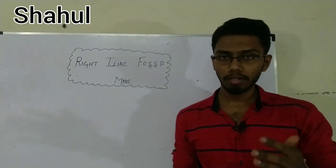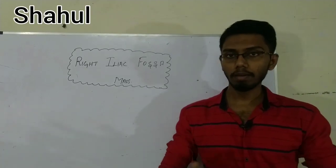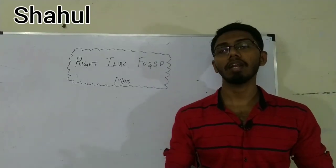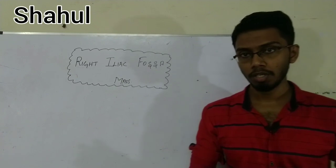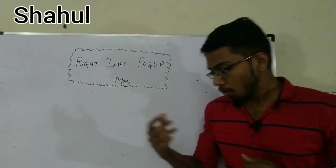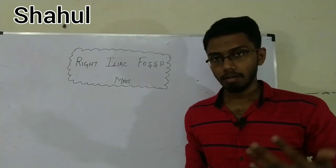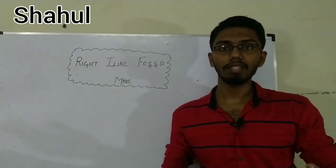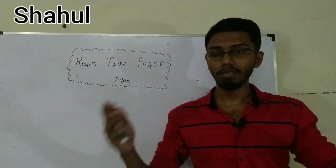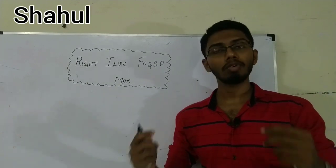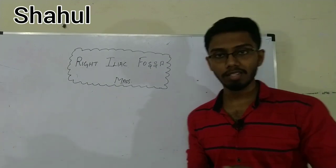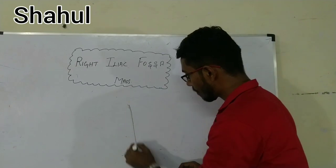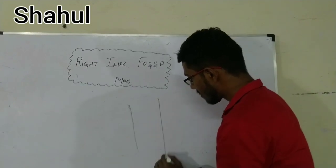This is an important, though rare, long case in our clinical examination. To understand the right iliac fossa, we need to know the basic divisions of the abdomen. We know that we have nine regions in the abdomen, so dividing the abdomen into nine regions.